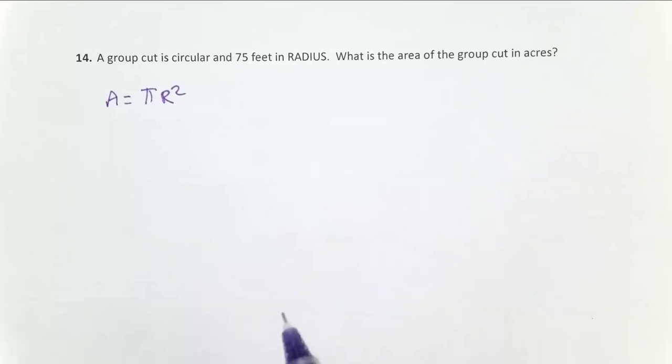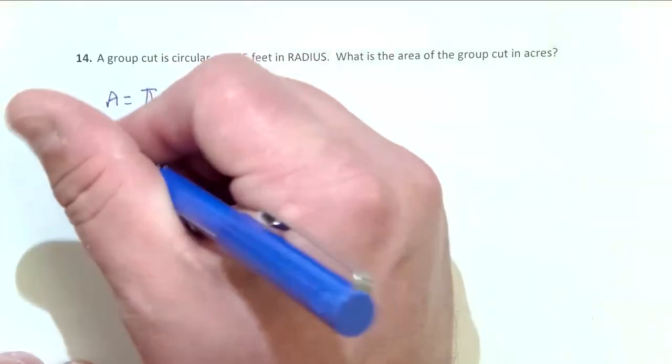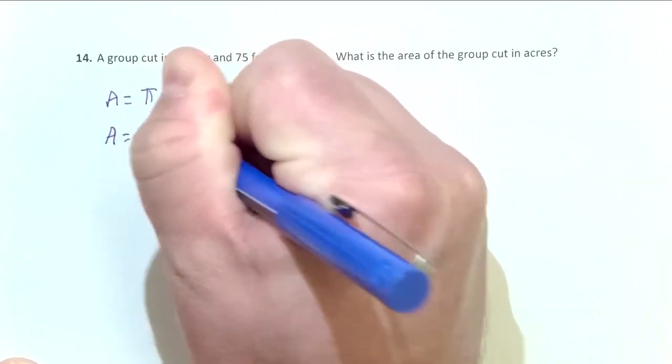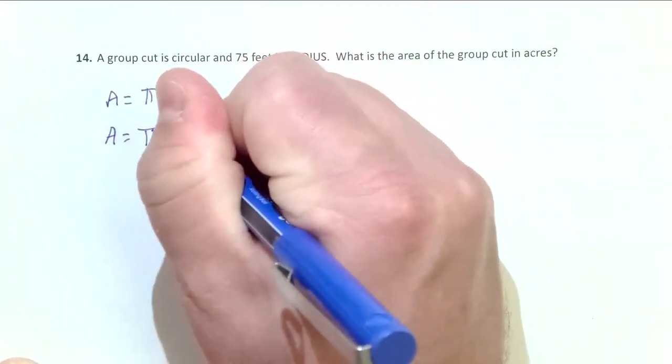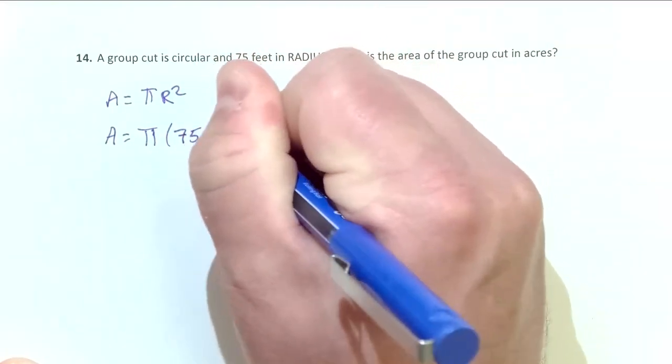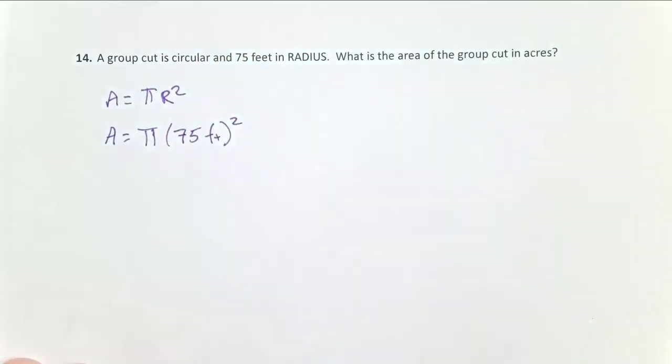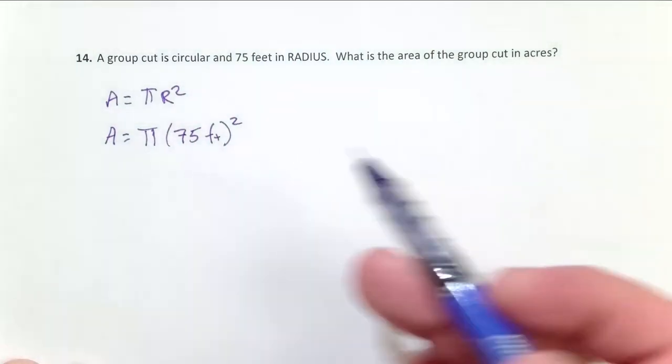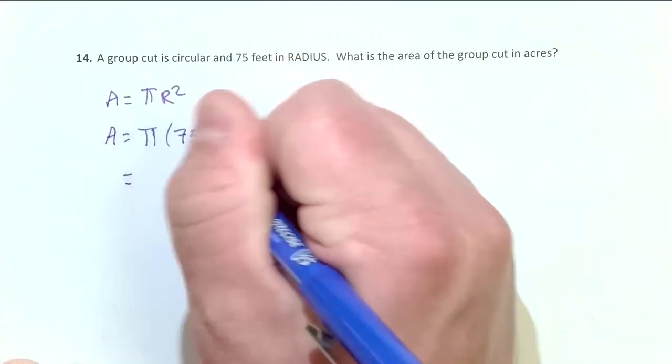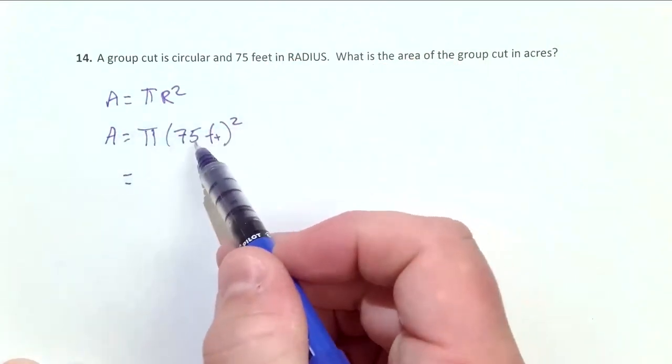What I'll do here is simply plug in my value for this scenario. Area equals π... we don't need to reshuffle this equation, we already have the radius, so 75 feet squared. Pi is 3.14159, most calculators will have a pi button you can use. For order of operations, square 75 first.